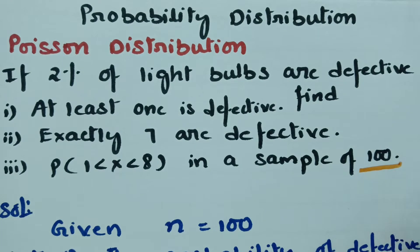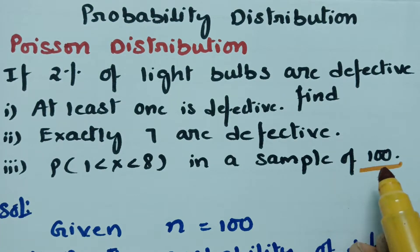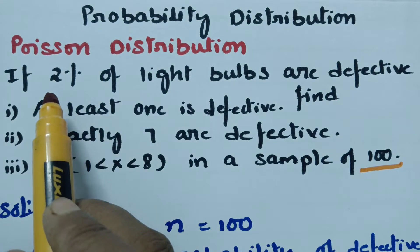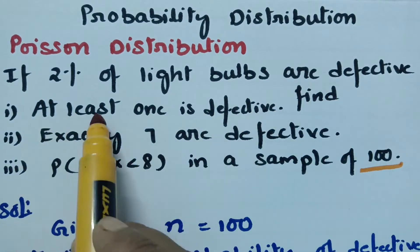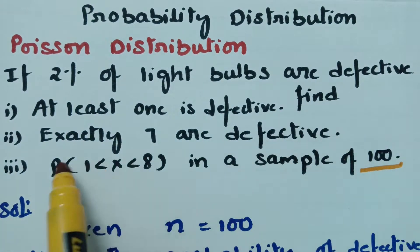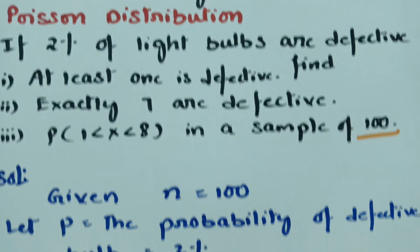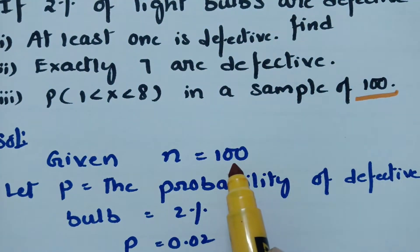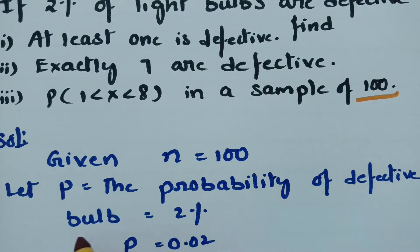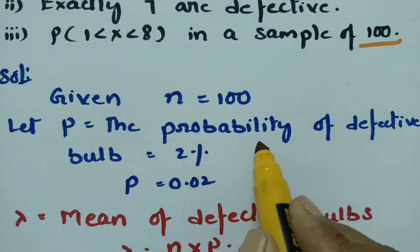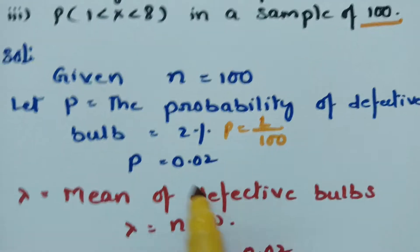In the sample of 100, the n value is given as 100. Out of 100 bulbs, 2% of light bulbs are defective. The defective bulbs probability is P. P is equal to the probability of getting 2% defective bulbs. So n is equal to 100, and P is the probability of defective bulbs — 2%, that is 2 by 100, which is equal to 0.02.